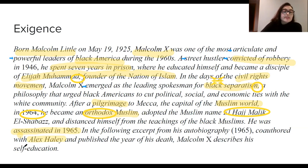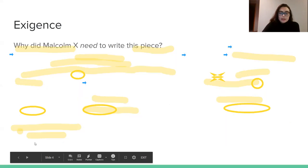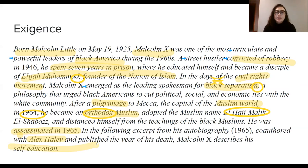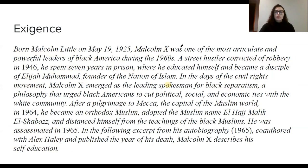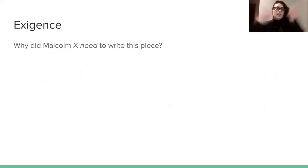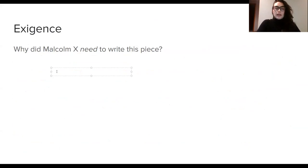And then we get this final phrase: his self-education. So this self-education is the important part we're trying to focus on here. After looking at and thinking about all this information, we need to go back to the question: why? Why is he writing this? Why did he need to write this piece? What could he possibly have to say? That's where we need to think about the exigence, which you can get just from that biographical information.